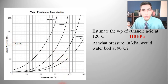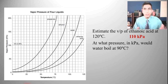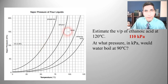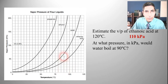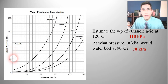At what pressure in kilopascals would water boil at 90 degrees Celsius? The boiling point of a liquid is the temperature at which its vapor pressure equals the surrounding atmospheric pressure. Looking at water at 90 degrees Celsius, we find 90 degrees on the x-axis, go up to the curve for water, and it looks to be about 70 kilopascals.